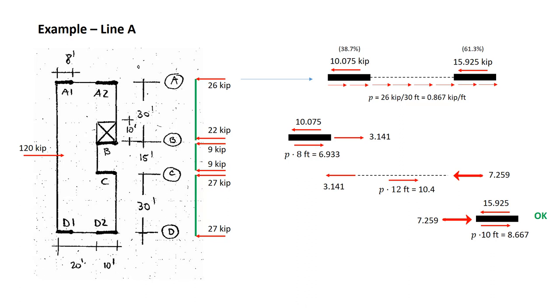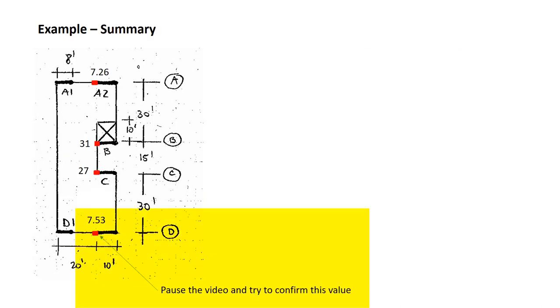The largest collector force is the largest force on that collector element which is the 7.259 kips. We've identified the maximum collector force along line A. The calculation for line D is similar and I'll let you do that on your own. The value shown on the bottom, 7.53 kips, is the value that you would obtain if you did the same calculation along line D. You can pause the video now to try to confirm this value.